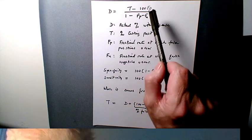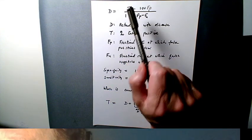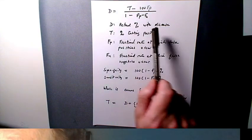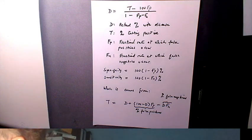At its very simplest, of course, you can see that if Fp and Fn are zero, which is a perfect test, then capital D is the same as T. The percentage of people with the disease is exactly equal to the percentage of people testing positive.